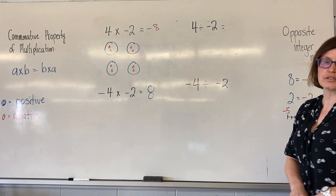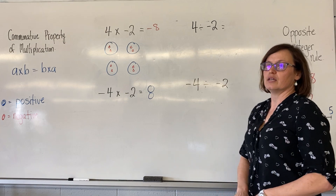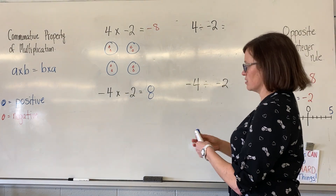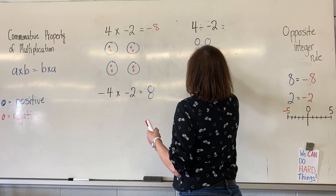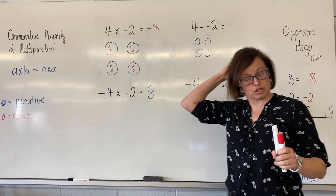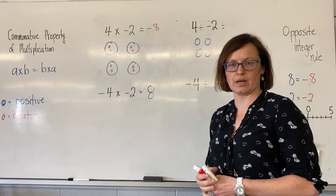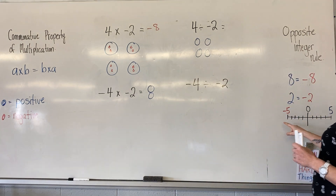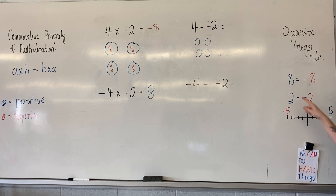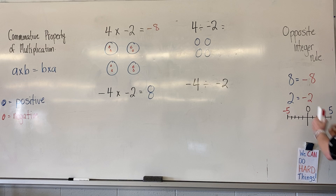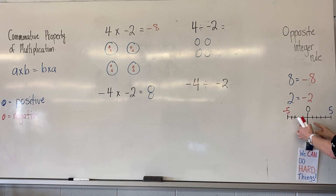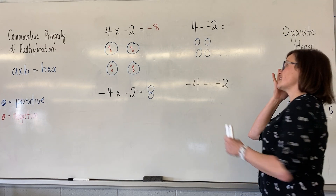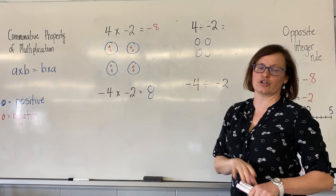So positive four divided by negative two. I have four positives, and I'm going to divide it into negative two groups. But how can we divide something into a negative two group? So we're going to use the opposite integer rule. Opposite integers are their distance from zero — the opposite of positive eight is negative eight because it's the same number of steps to get to zero. Positive two is negative two, positive five is negative five — equal distance back to zero. So I'm going to use the opposite integer of negative two.